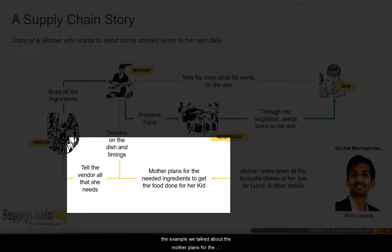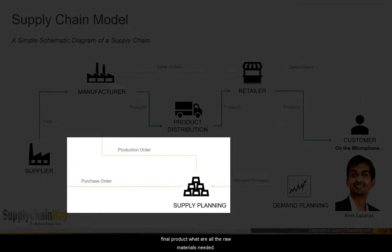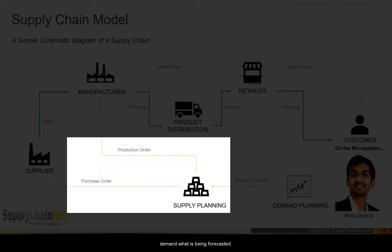Once the demand forecast is given, supply planning breaks down that requirement into raw materials. In the example, the mother plans for the ingredients to make lunch. Similarly, to make the final product, you identify all the raw materials needed to match the forecasted demand. That is the output of supply planning — a list of all raw materials required.